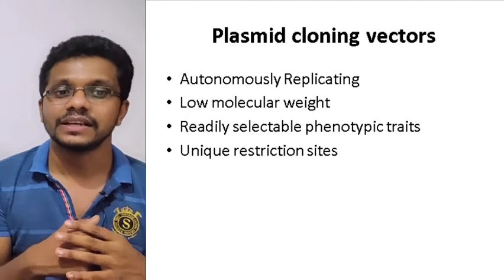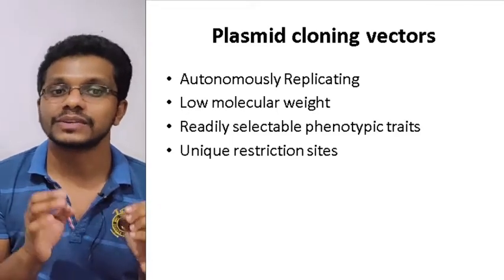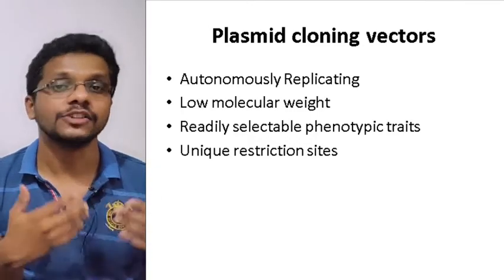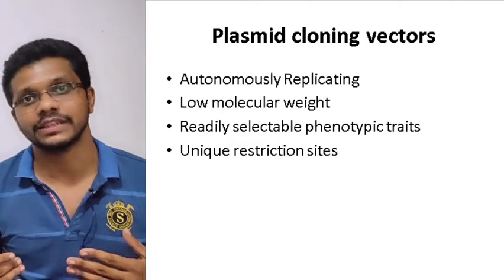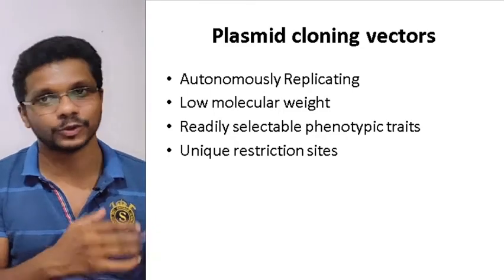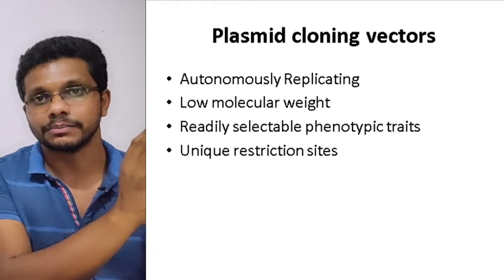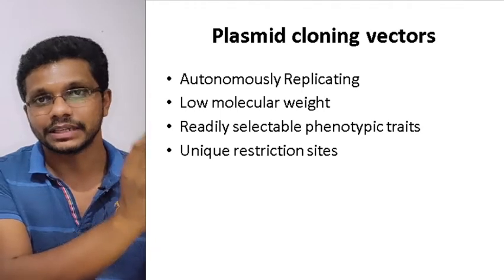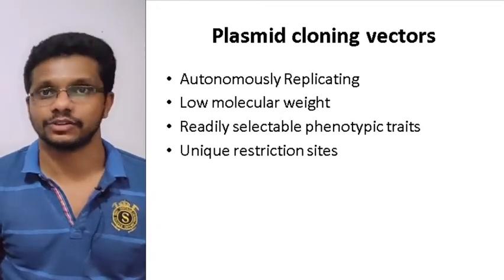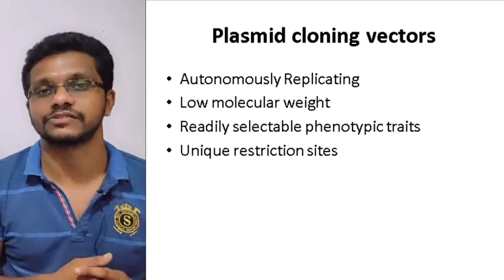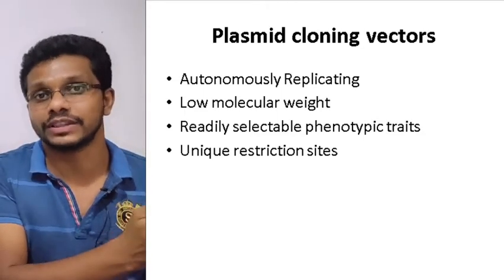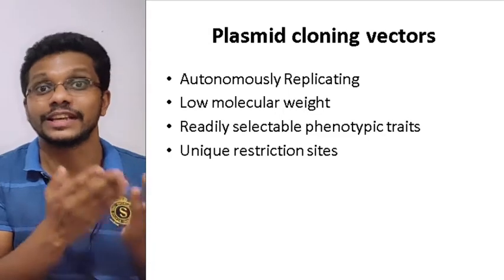The third point is that a plasmid cloning vector should have readily selectable phenotypic traits. It should confer some characteristics onto the bacteria so that you can identify the bacteria which is transformed with the vector, and specifically the bacteria which is having the recombinant plasmid. You should be able to distinguish between the bacteria which is not transformed and the bacteria which is transformed. Once it gets the plasmid, it should have some extra phenotypes — readily selectable, scoreable, or screenable phenotypes. We should be able to distinguish between the cell which got the plasmid and the one which got the recombinant plasmid.